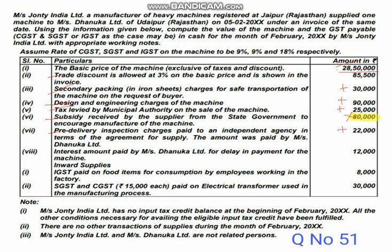Interest amount paid by Danuka Limited for delay payment in machinery. For this, you have to calculate like this: 12,000 multiplied by 100 divided by 118. Whatever the GST rate is, that is added in the denominator. I will show this in the solution phase — this calculation will be covered there.